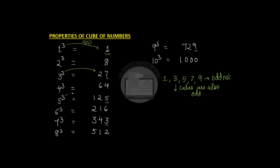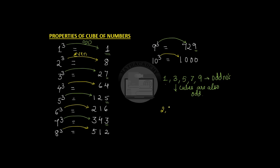We are seeing it here: cube of three is twenty-seven, cube of five is one twenty-five, cube of seven is three forty-three. Cubes of all odd numbers are odd, and cubes of all even numbers are even. Cube of two is eight, cube of four is sixty-four, cube of six is two sixteen, then five twelve and a thousand. So the cube of all even numbers are even. Numbers ending with two, four, six, eight, or zero are all even numbers, and their cubes are also even.